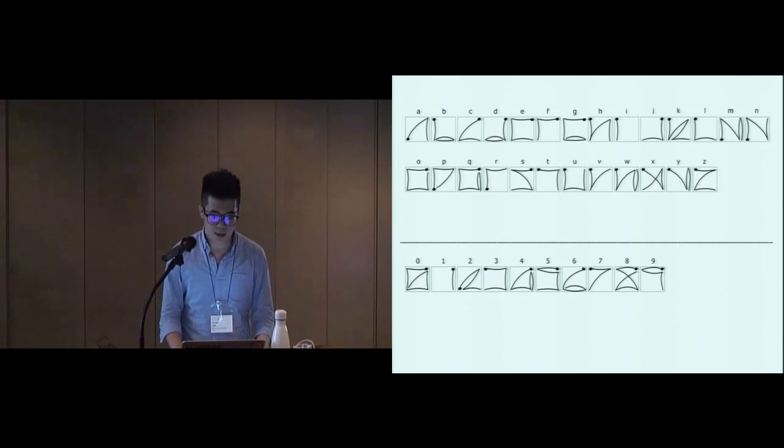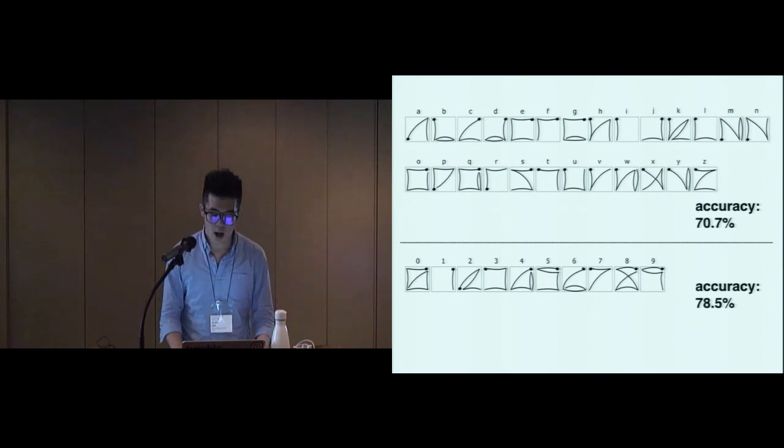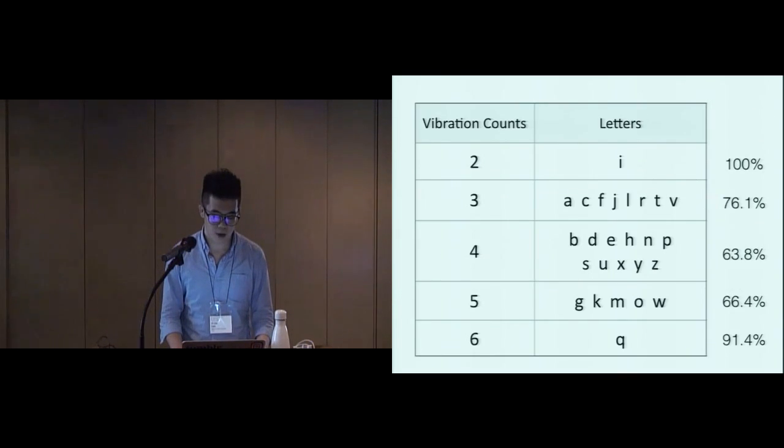In this study, we display all the alphanumeric patterns on the 2x2 tactile display. 24 participants were recruited and assigned evenly into the two groups. The overall recognition rates of letters and digits are around 71% and 79%, respectively. To further analyze the relation between recognition rates and the length, we categorize the patterns based on the vibration counts.